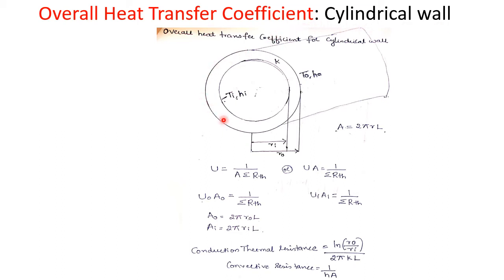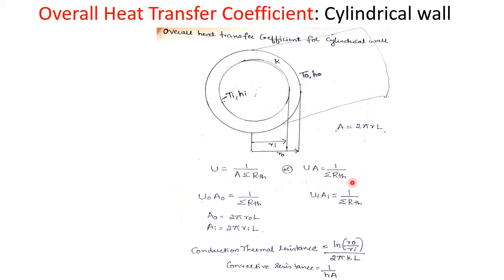Consider a cylinder where Ri indicates the radius of the inner surface and R0 indicates the radius of the outer surface. The surface area of the cylinder is given by 2πRL. The overall heat transfer coefficient is given by U = 1/(A·ΣR), or equivalently U·A = 1/ΣR.